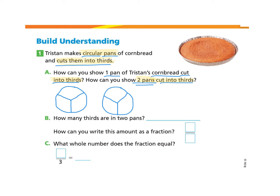Now let's take a look at Part B. How many thirds are in the two pans? If you would like to pause and try this part on your own, you may do so. You can count each part: one, two, three, four, five, six — and find that there are six thirds.